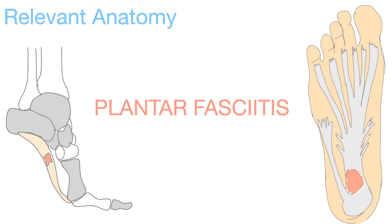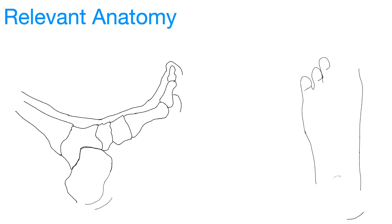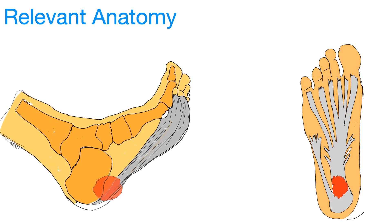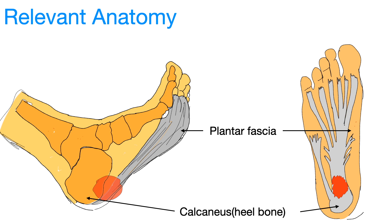Plantar fascia is a thick connective aponeurosis that originates proximally on the middle tubercle of calcaneus and inserts distally in the form of five distinct bands onto the metatarsal head and the basis of proximal phalanges. Plantar fasciitis is a condition caused by inflammation of the aponeurosis at its origin on the calcaneus.